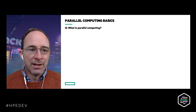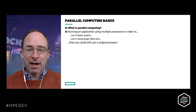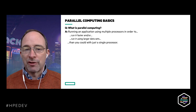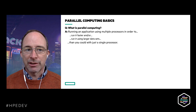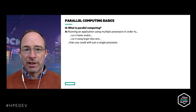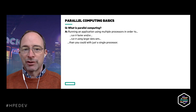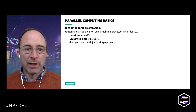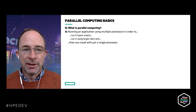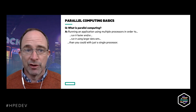My definition of parallel computing is: taking an application and running it not on a single processor but on multiple processors. The reason you might want to do this is to run it faster — many processors running cooperatively can run your application faster than a single processor. Another motivation is that on distributed memory systems, each processor comes with a chunk of memory, so by running across many processors you can use more memory and handle larger datasets than you could on a desktop.